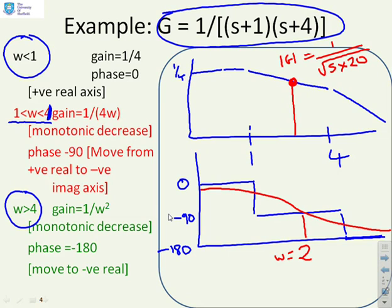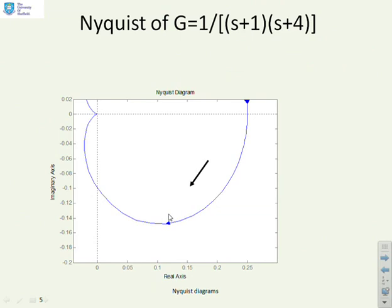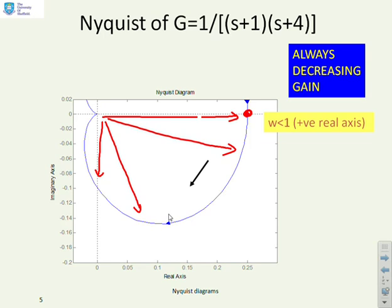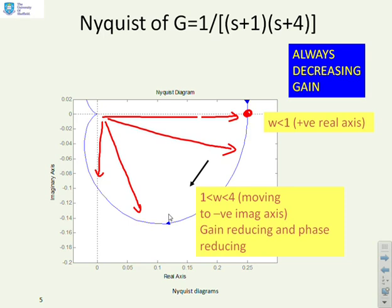Now let's transcribe this information onto the Nyquist diagram. We start at a quarter on the real axis. The gain is always decreasing, so the distances from the origin are always getting smaller. Between omegas one and four, the gain was reducing and the phase was reducing. For omega bigger than four, we're tending toward the negative real axis with a gain of zero. The resulting plot meets all the trends given — that's a reminder of what was done in the previous video.